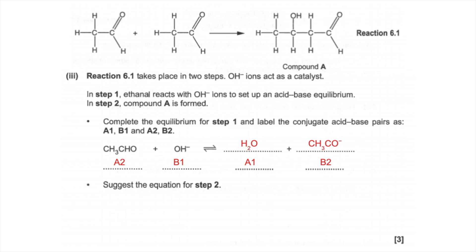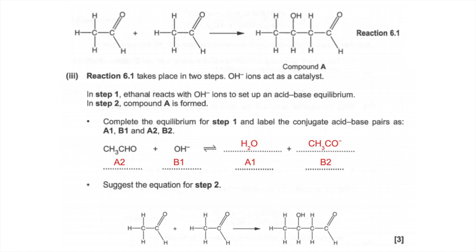Just remember with conjugate acid-base pairs you must have an A and a B on each side, and you must have a 1 and a 2 on each side.